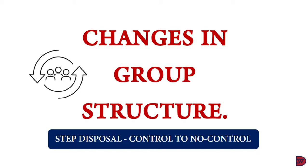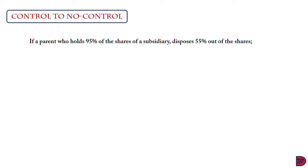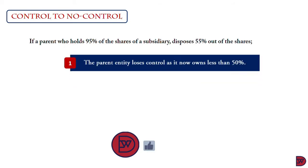Changes in group structure: step disposal, control to no control. In a previous lecture we looked at the situation where the parent disposes of its entire holding in a subsidiary. In this episode we are going to look at the situation where the parent disposes of a portion of its shares, leading to its losing control by maintaining some amount of shares in the subsidiary. If a parent who holds 95% of the shares of a subsidiary disposes of 55%, the parent entity loses control as it now owns 40%.